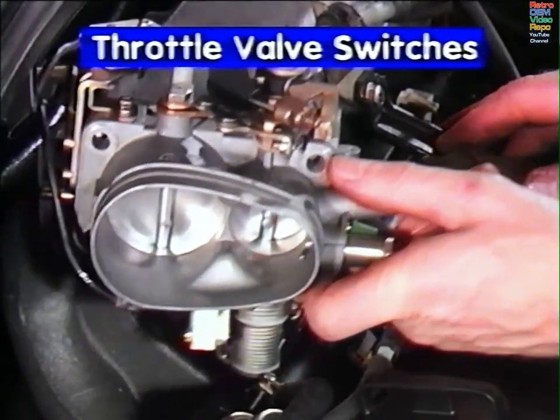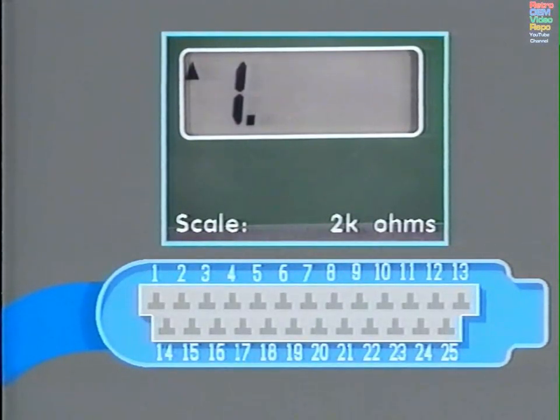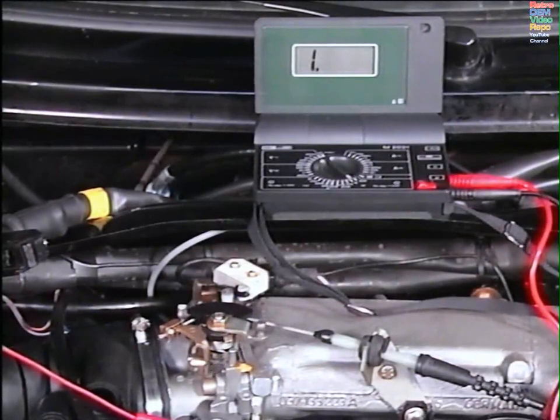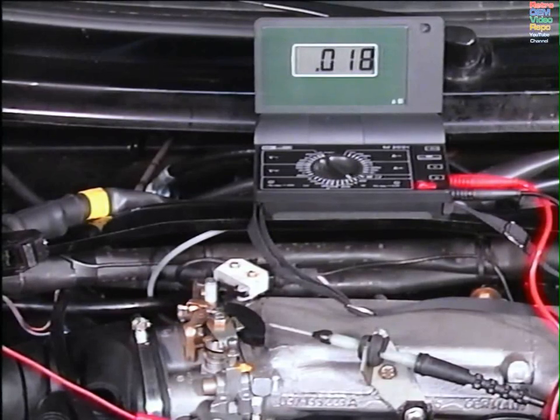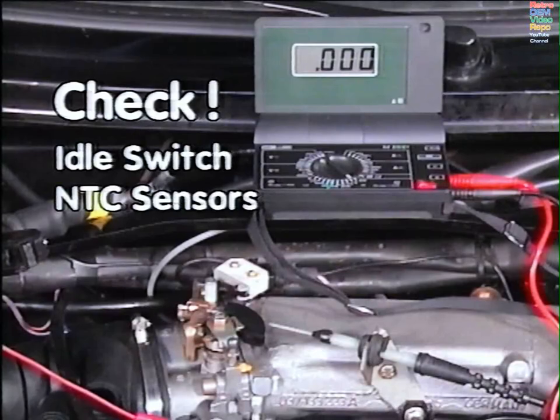Throttle valve switches. These, as you've seen, give information to the control box in the idle, part load, and full throttle positions. So with the multimeter set to the 2 kilo ohm scale and on the high current scale, with the throttle closed, place the red positive wire in pin 11 and the black negative wire in pin 6. The meter should read 0 ohms. Open the throttle slowly and the meter records open circuit or infinity. When the throttle is fully opened, the meter should read 0 ohms again. If the values are not correct, adjust the throttle switch as described in the workshop manual. Experience has shown that many problems with the erratic running of these engines have derived from a badly adjusted idle switch or incorrect information from the NTC sensors.